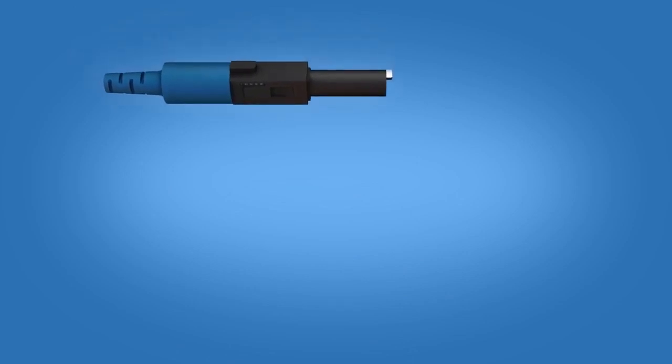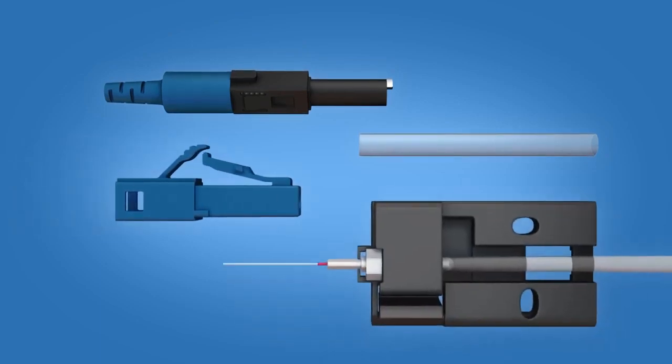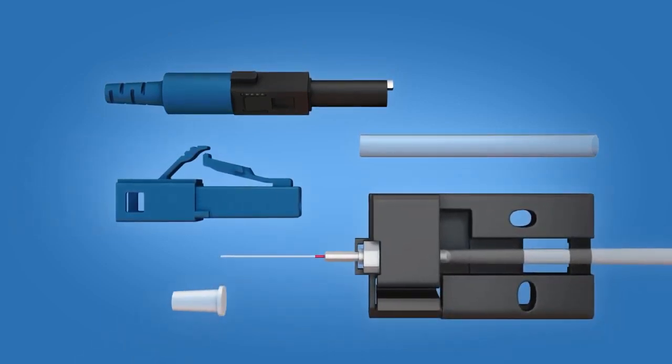The LC FuseConnect connector includes the following materials: a boot unit, a protective sleeve, a ferrule unit, connector housing, and a dust cap.